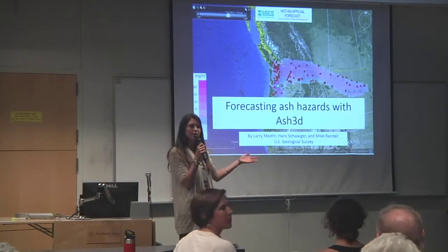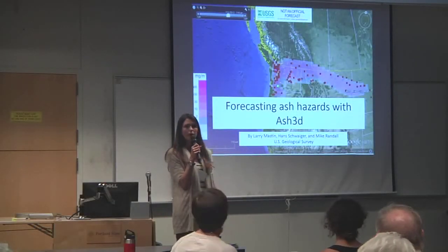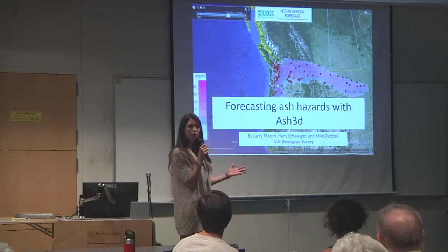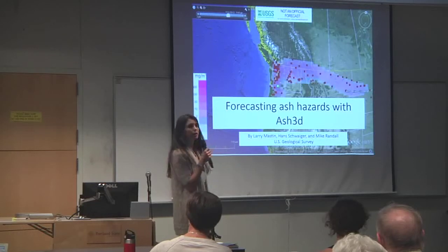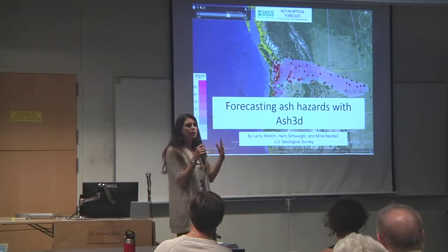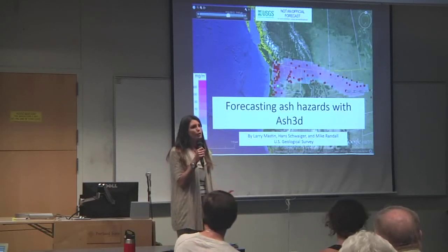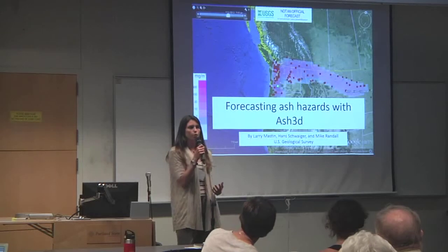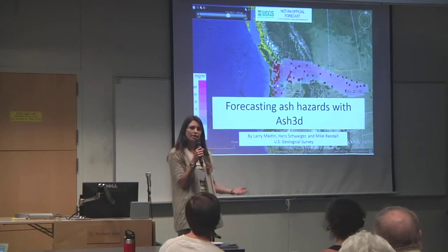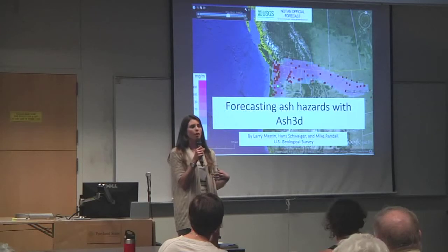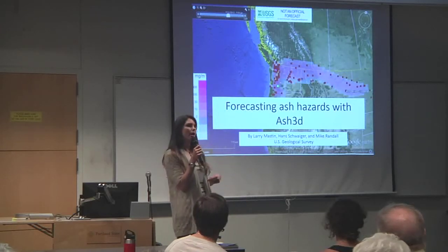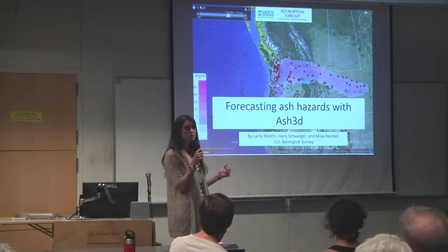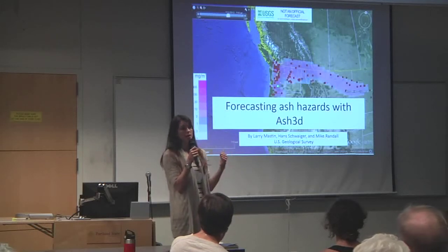Larry really wanted to be here to give this talk about the new ash dispersal model for the USGS, but couldn't make it this week, so I'm just giving it on his behalf. This is really about a new code that's been developed for forecasting ash hazards from explosive volcanoes, and also it's used as a research tool. The focus here is on how everybody in this room could potentially use this in your own research.